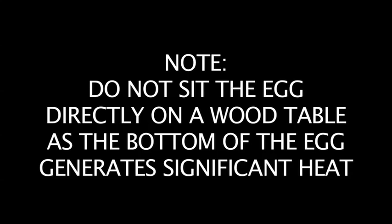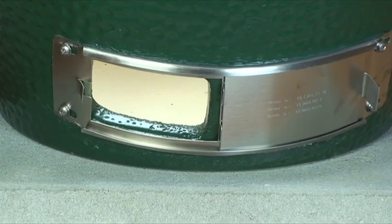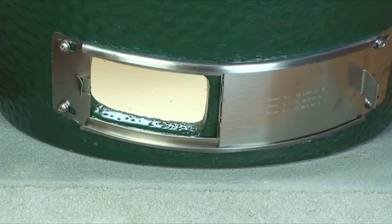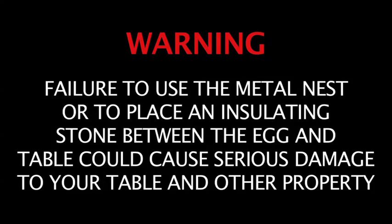If you're sitting your mini egg in a wood table, please be sure you do not sit the egg directly onto the wood. As the bottom of the egg generates significant heat, we recommend that you place an insulating stone between your egg and the table to protect the wood. Warning! Failure to use the metal nest or to place an insulating stone between the egg and table could cause serious damage to your table and other property.